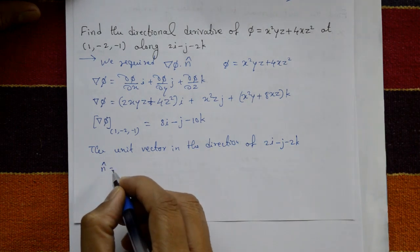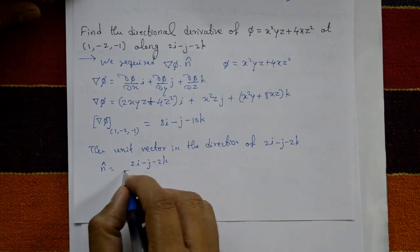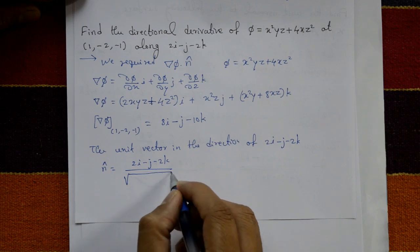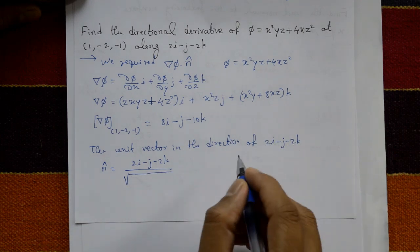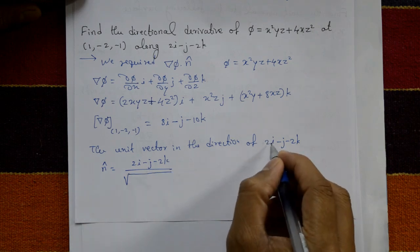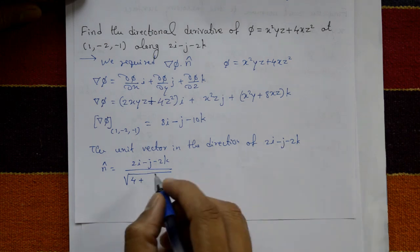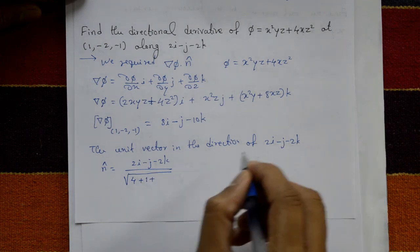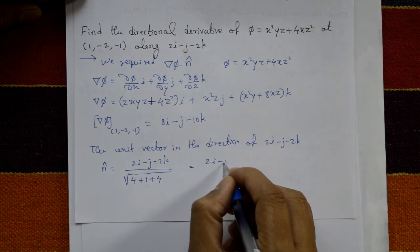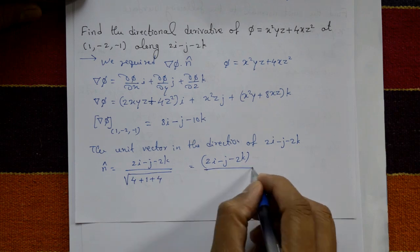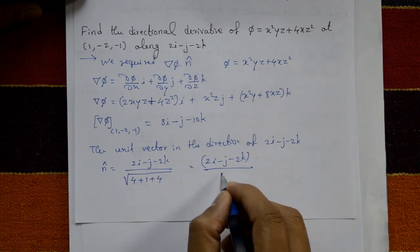The unit vector equals 2i minus j minus 2k divided by the square root of the sum of the squared coefficients: root of (4 plus 1 plus 4), which equals root 9, which is 3. So the unit vector is (2i minus j minus 2k) divided by 3.